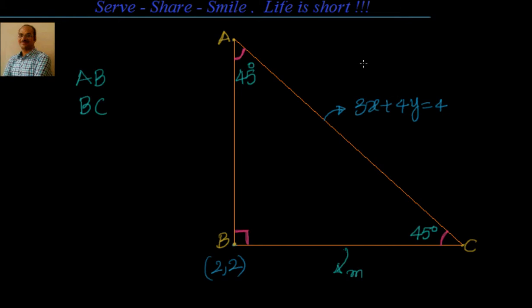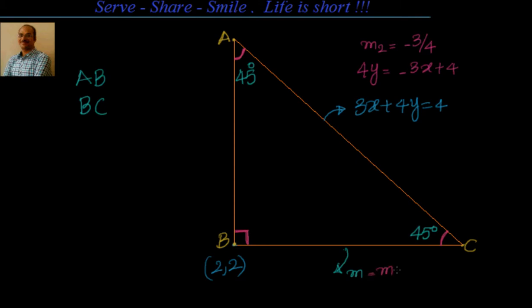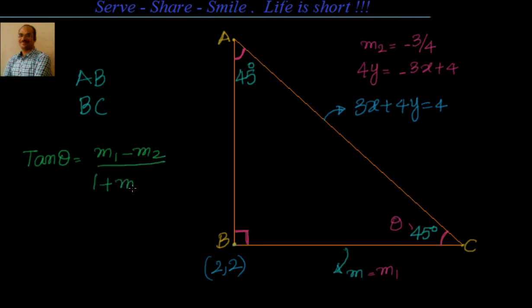3x plus 4y equal to 4. So 4y equal to minus 3x plus 4, or slope m2 equal to minus 3 by 4. And m is m1 in the formula. So we have m1, we have m2, and we have theta. We can directly substitute them. We know that if two lines are making an angle of 45 degrees, then tan theta is given by m1 minus m2 divided by 1 plus m1 times m2.